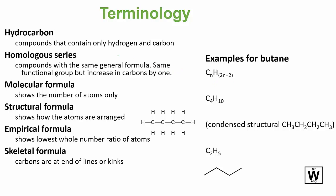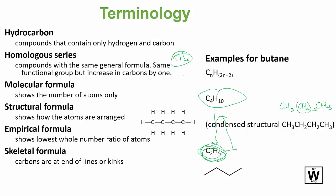Some key terminology: hydrocarbons contain only hydrogen and carbon. A homologous series is a set of compounds where each member differs by an added CH2. The molecular formula is what you're used to writing. Empirical formula will be covered soon — it's how we experimentally determine substances and then work toward the molecular formula. The structural formula is what you want to write in your exam; make sure you always write every single atom and every single bond.